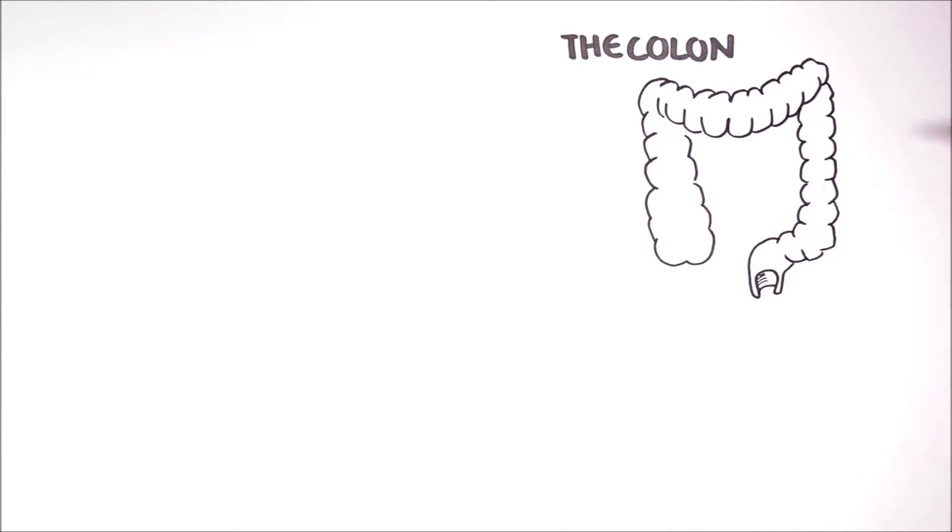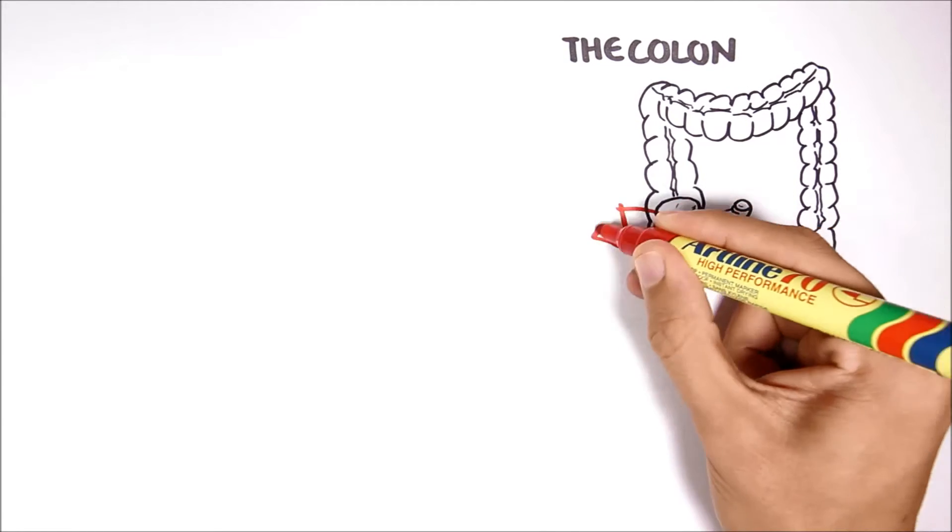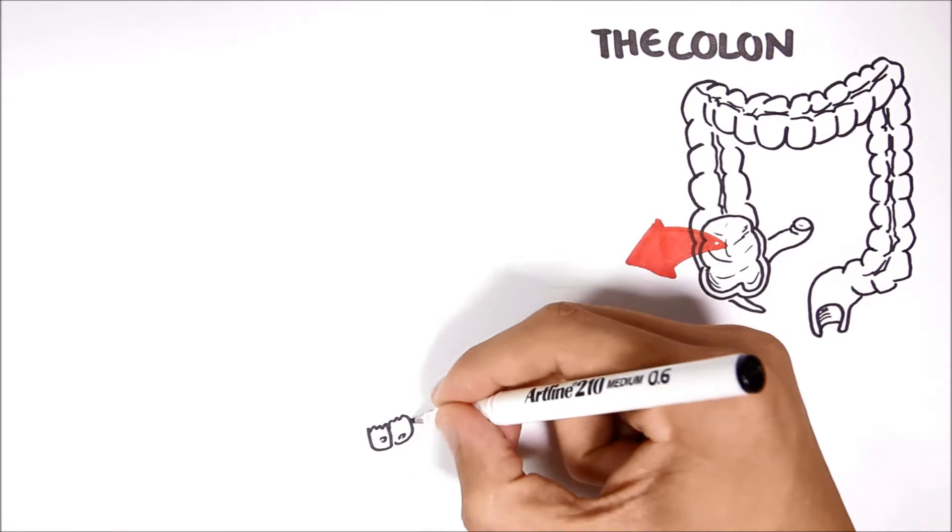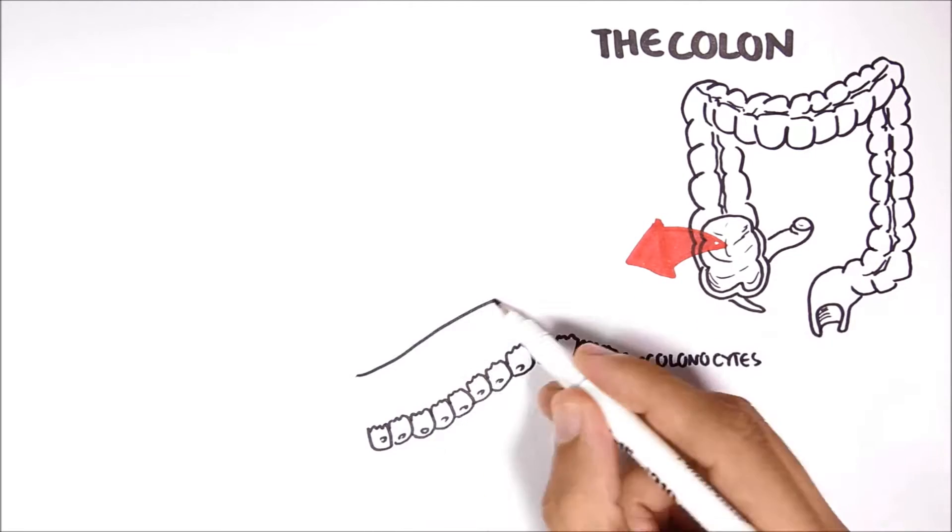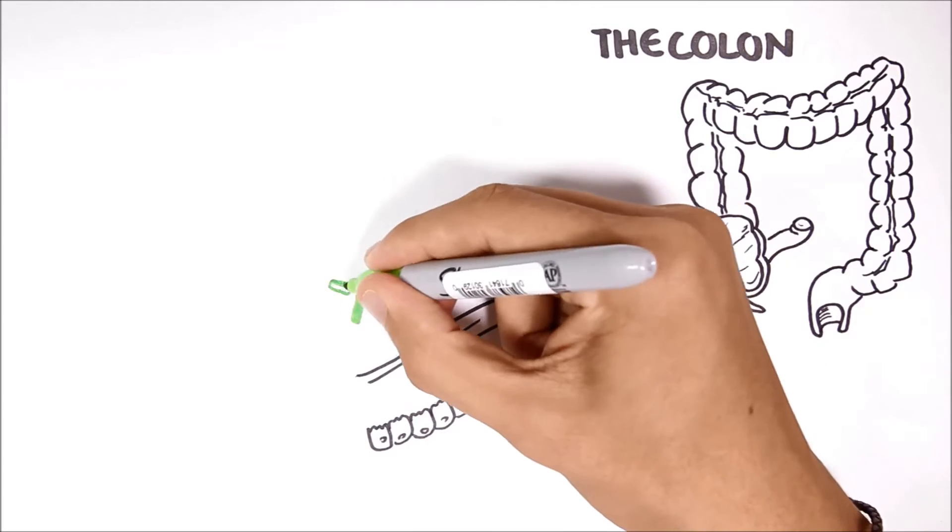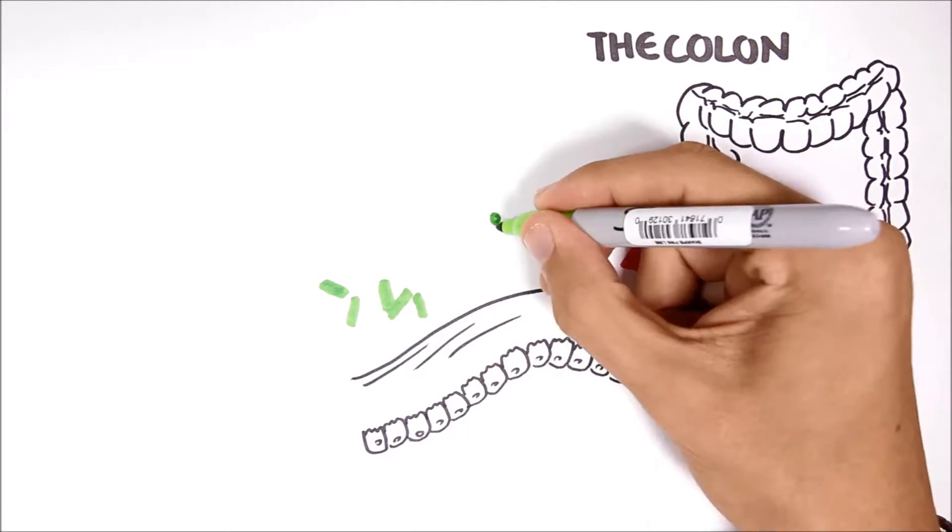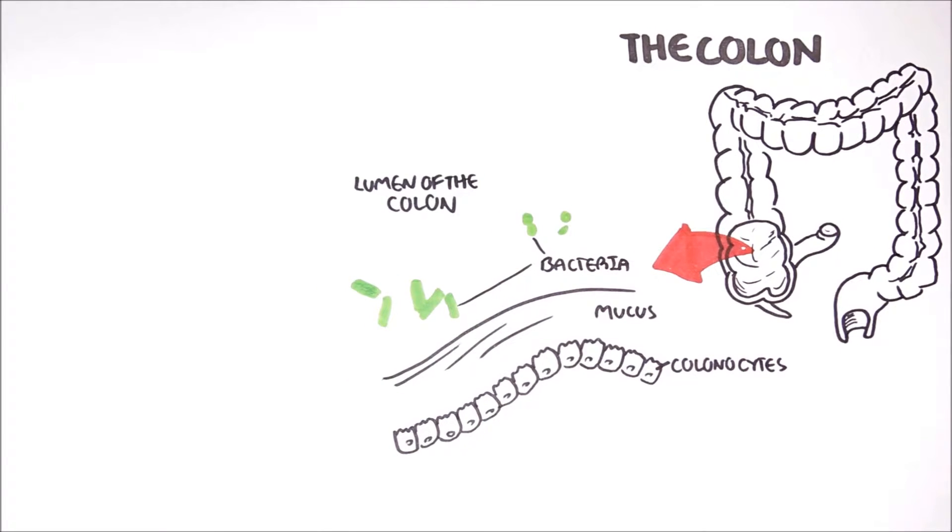The colon is colonized by trillions of bacteria. If we zoom into a section of the colon, we can find the colon's cells. And on top of the cells, towards the lumen, is mucus. Bacteria reside on the mucus and within the lumen. These bacteria have many functions in our body, one of which is fermenting foods that have escaped digestion in the small intestine.